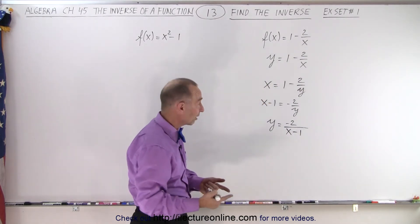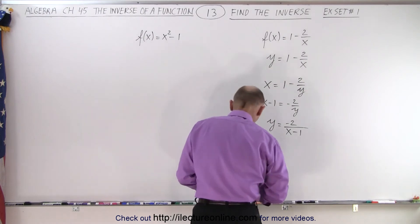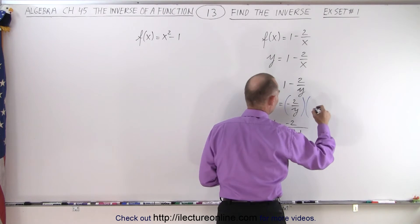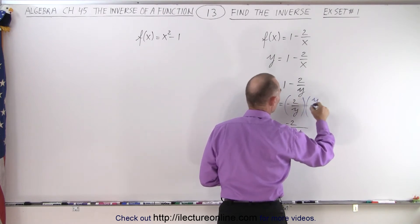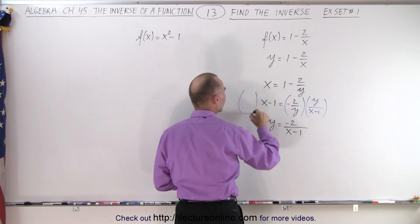But in other words, we multiply both sides by y and we divide both sides by x minus 1. So if you want to see what that looks like, in this case, we multiply the right side by y over x minus 1 and we multiply the left side by y over x minus 1.